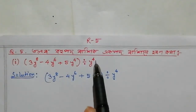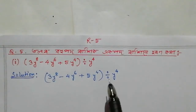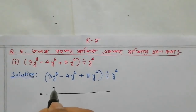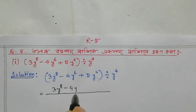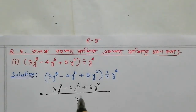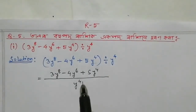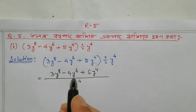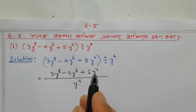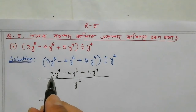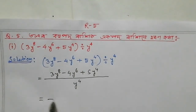For question No. 5-2, we write: 3y to the power 8, minus 4y to the power 6, plus 5y to the power 4, divided by y to the power 4. We have y to the power 8, y to the power 6, y to the power 4, or 6 or 8y.